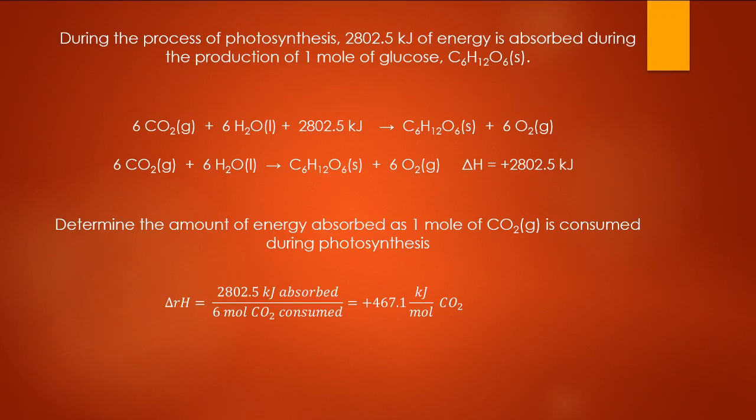If we wanted to rewrite this then as the reaction but then have the energy term separately, we would have the equation appearing the same way. We would write the delta H term at the end indicating that that energy was absorbed and therefore we have gained 2,802.5 kilojoules of energy through that process as indicated by the plus sign. In this case we can